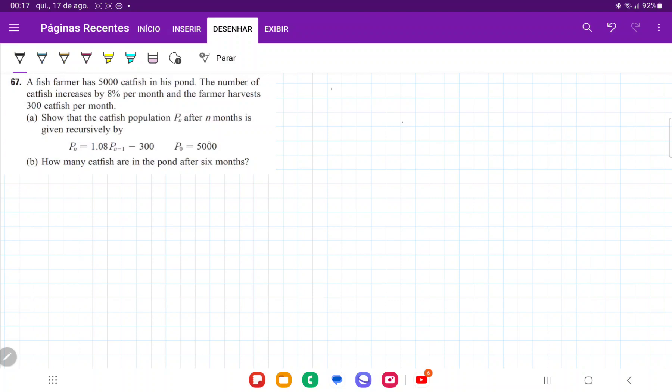For item A, they want us to show that the population after N months is given by this formula recursively. And our recursive formula just tells you how to go from one value to the next, or one index to the next. So we have to show where this formula comes from.